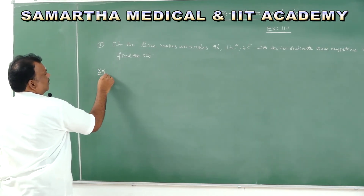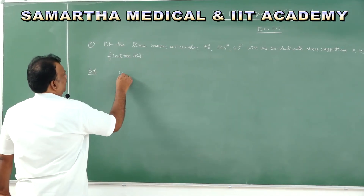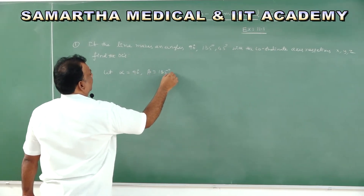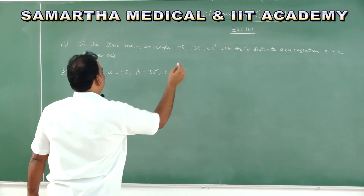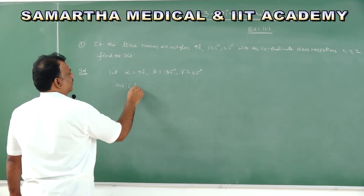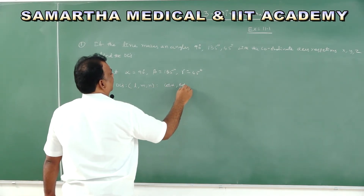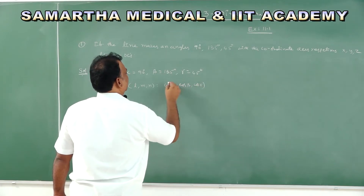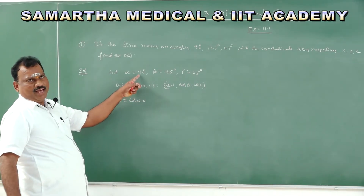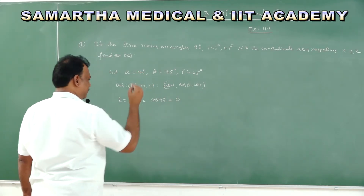The angles given are inclinations. Let alpha = 90°, beta = 135°, gamma = 45°. Direction cosines are denoted L, M, N = cos α, cos β, cos γ. So L = cos 90° = 0.